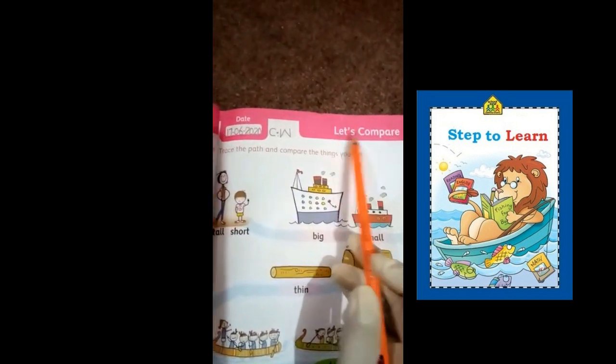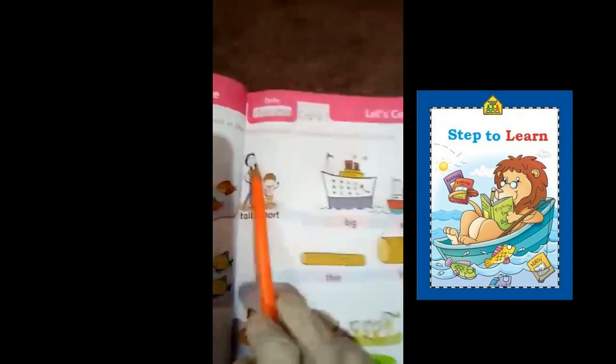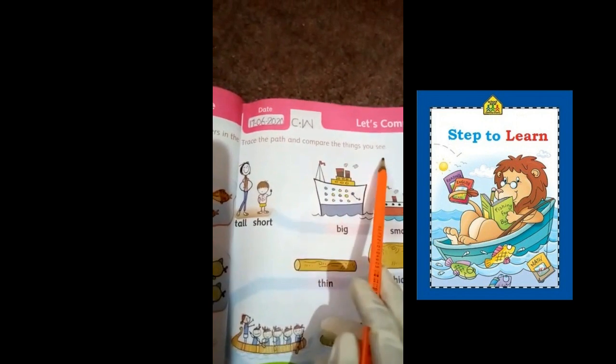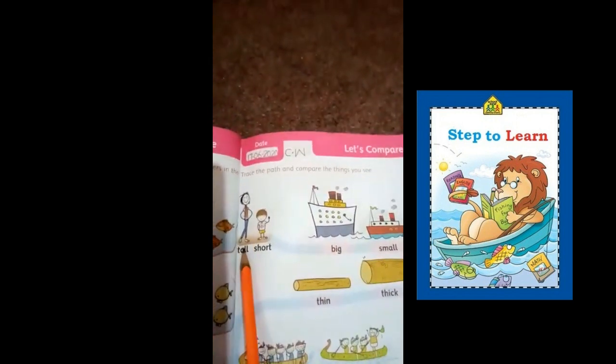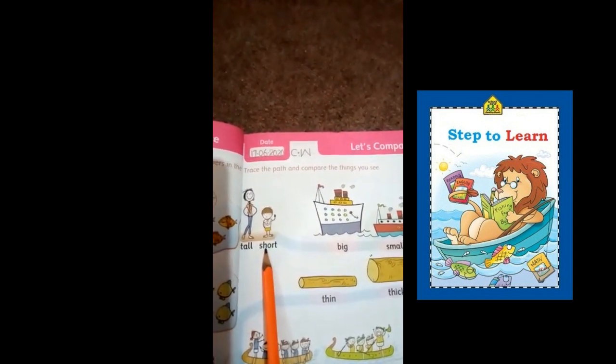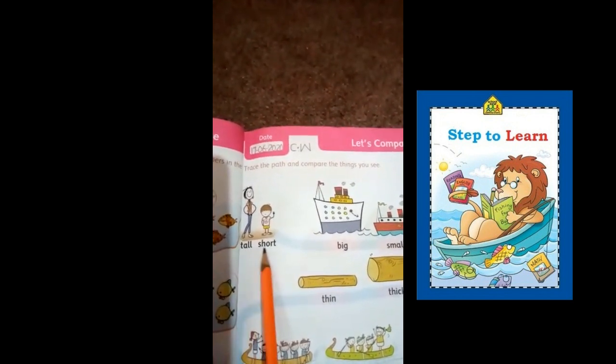Let's compare. Trace the path and compare the things you see. First one is tall and short. You have seen tall and short. This is the way we are going.